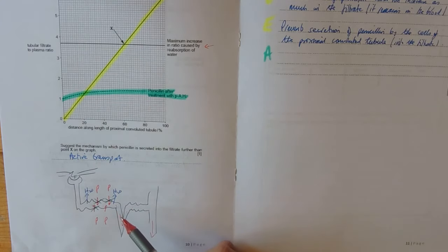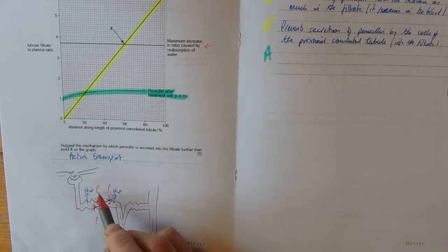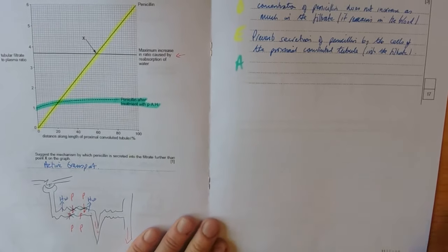So, just give penicillin alone, then a lot of penicillin is going to be lost in urine. Whereas if we give this drug, it's going to stay in the body, stay in the blood. And of course then that will be able to fight infection better.